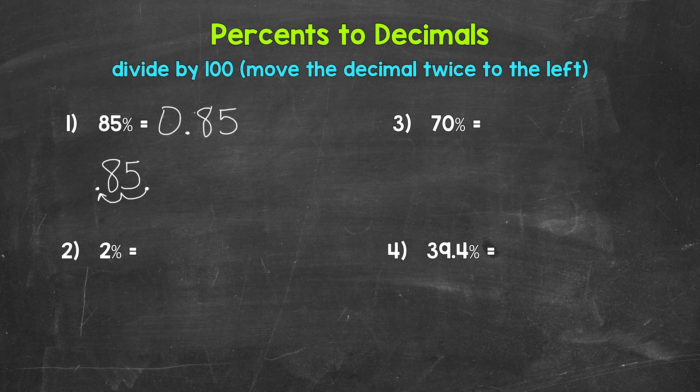Now, when I rewrote that decimal, I started with a zero and then the decimal. This is common when writing decimals because it helps us recognize and see the decimal. We don't want the decimal to get overlooked.